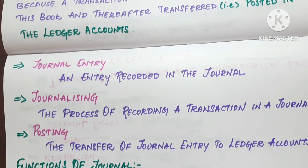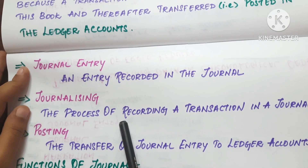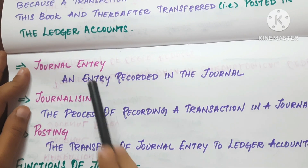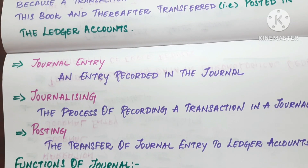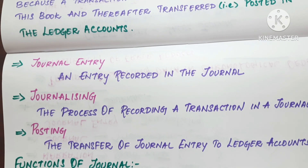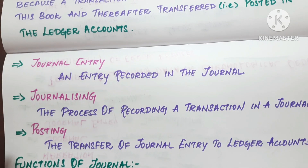Journalizing is the process of recording a transaction in the journal book. Posting is the transfer of a journal entry to the ledger account.